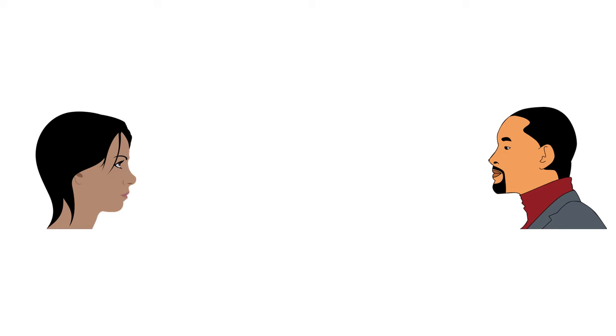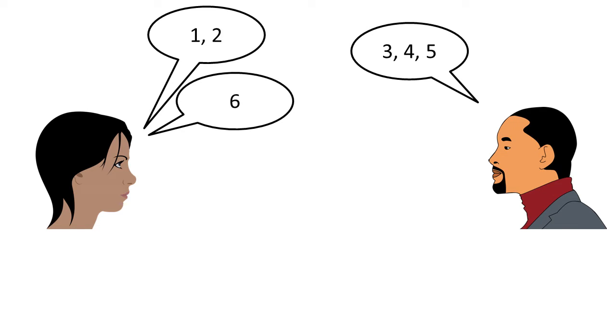So in this example, player one starts by saying one two. Player two can add up to three more, so they could say three four five. It now goes back to player one. They've chosen just to add on one number now, so they've gone to six.